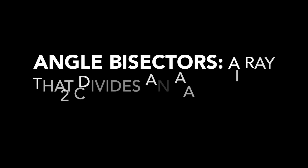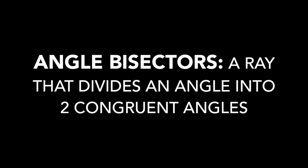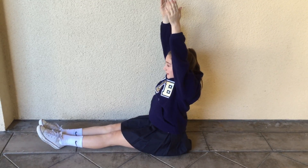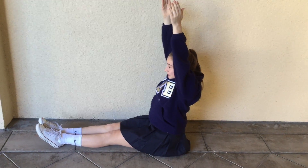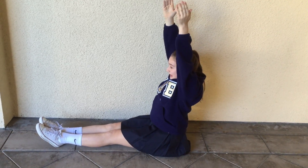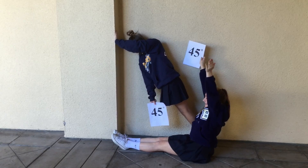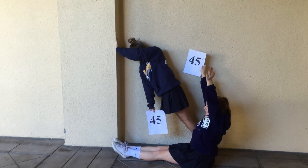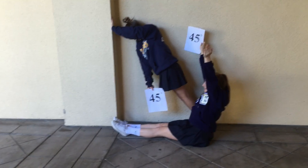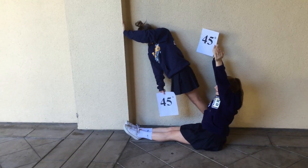The definition of an angle bisector is a ray that divides an angle into two congruent angles. Here is just an ordinary right angle. Now that the angle is bisected, it forms two congruent angles.